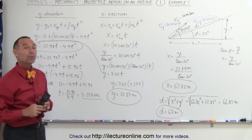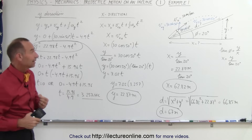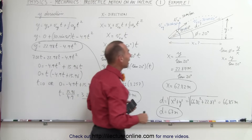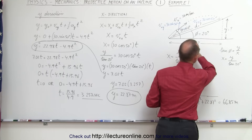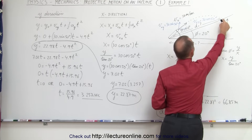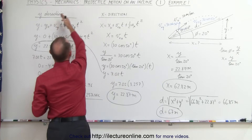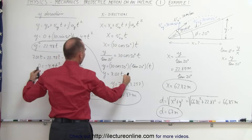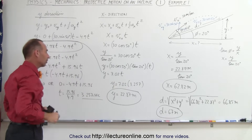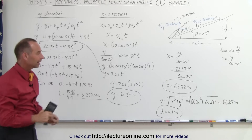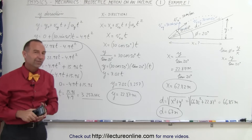That's how we work with projectile motion on inclines. The key is realizing that the time to reach a certain horizontal distance is the same as the time to reach the corresponding height. We write the kinematic equations in both the y and x directions, recognize it's the same time, substitute one into the other, solve for time, then calculate x, y, and finally d.